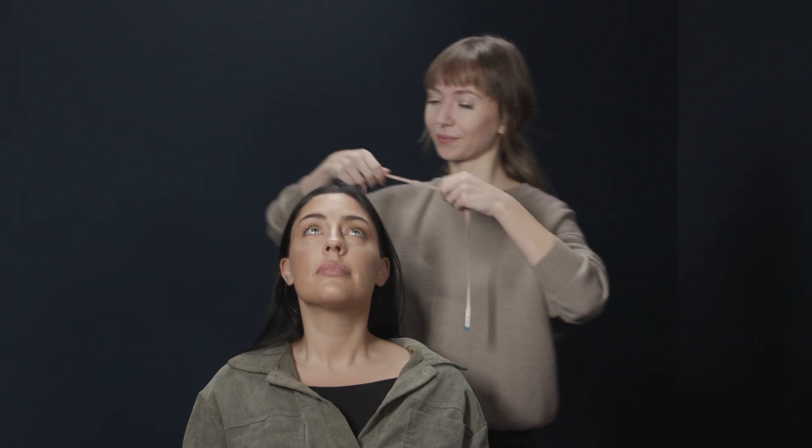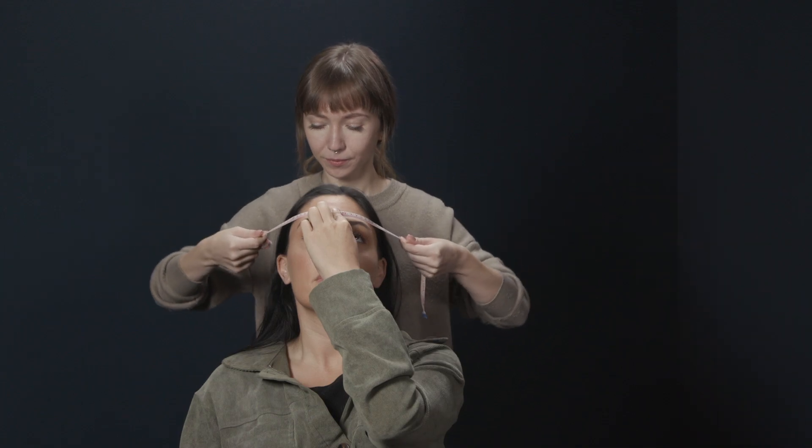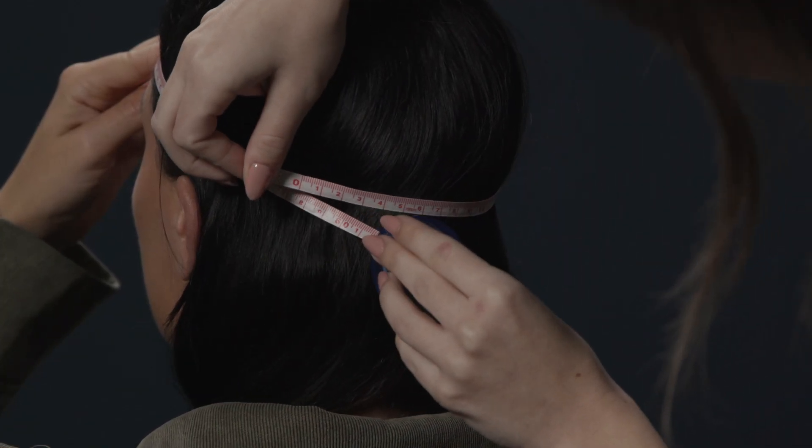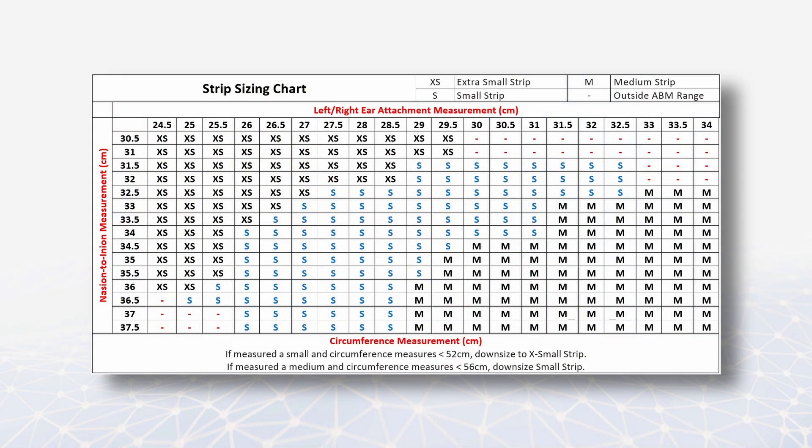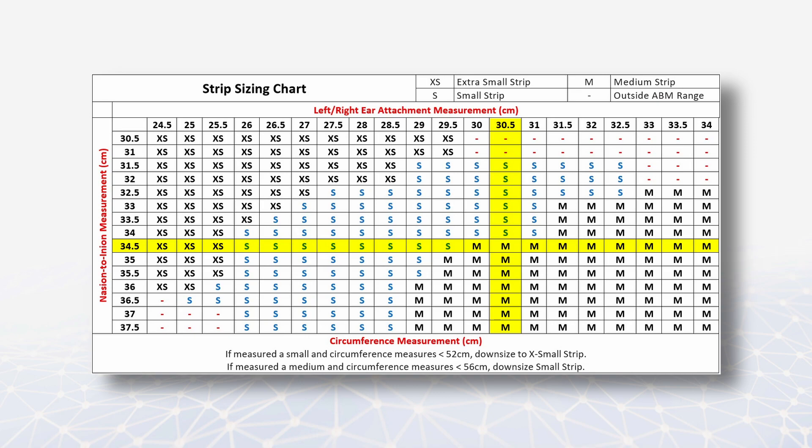Then measure the circumference. Ask the subject to look up slightly and line the tape up just above the eyebrows. It may be helpful to ask the subject to place their finger on the tape to prevent it from moving. Wrap the tape around the head right above the ear attachment and connect just above the inion. Record the value. Use the strip sizing chart provided with your system to determine the appropriate strip size. Find the recorded nasion to inion value on the y-axis and the top of ear attachment value on the x-axis. Locate the point where the two values intersect to identify the subject's appropriate strip size. Some head shapes and sizes may require an adjustment. For medium head sizes with a circumference less than 56 cm, downsize to a small strip. For small head sizes with a circumference less than 52 cm, downsize to an extra small strip.